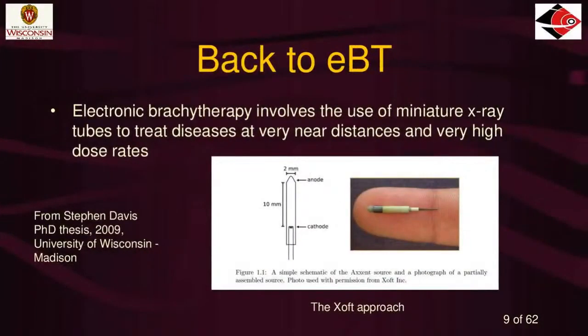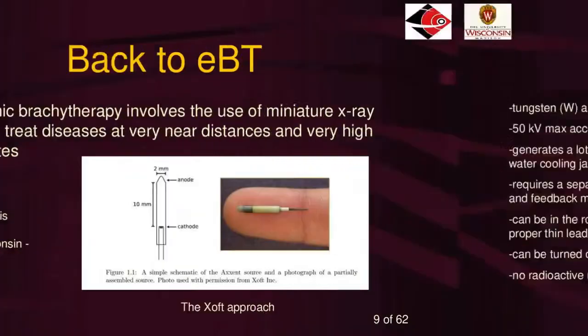Back to electronic brachytherapy dosimetry. Electronic brachytherapy involves the use of a miniature X-ray tube, not a radionuclide. We treat diseases with this at very near distances and very high dose rates. An example is the Zoft Accent miniature X-ray tube — a fantastic piece of engineering you can see sitting on someone's finger. It has a cathode on one side and a tungsten anode on the other, and you apply 50 kilovolts as the max energy. The electrons go down a tiny accelerator tube, hit the target, and create Bremsstrahlung radiation that can be put inside a patient or used to treat skin. They actually glow blue when you turn them on.